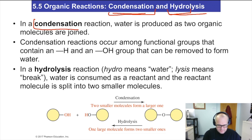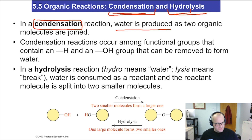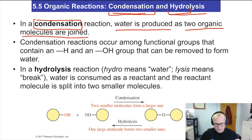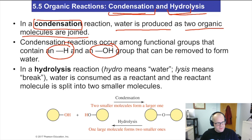Condensation reaction: water is produced. When there's condensation on your car window in the morning, water seems to have been produced out of nowhere — it actually came from the air. So water is produced as two organic molecules are joined together. You're going to have one molecule here and another molecule here, and they join together, but a byproduct of that reaction is going to be a water molecule. When doing a condensation reaction, you'll almost always have an OH group that can be removed and an H group somewhere else that will produce the water molecule. Because remember, water is H2O, so for two molecules to produce H2O, they have to have the parts to do it.